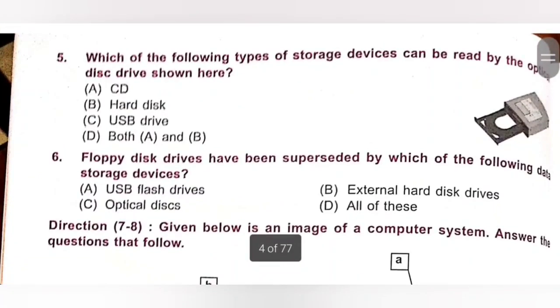Fifth. Which of the following type of storage device can be read by optical disk drive shown here? A. CD. B. Hard disk. C. USB drive. D. Both A and B. So, CD type of storage device can be read by the optical disk drive shown here. Option A is the correct answer.